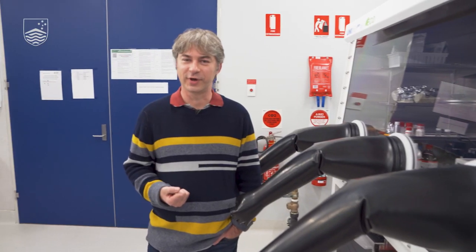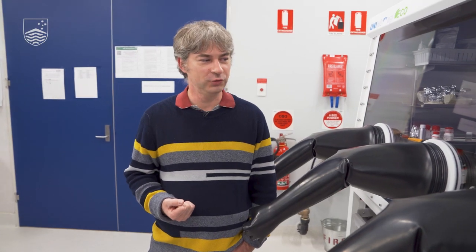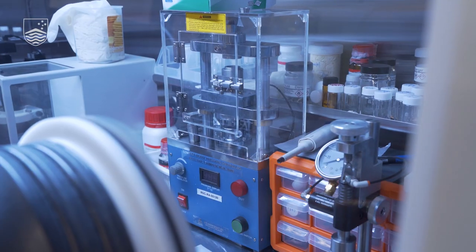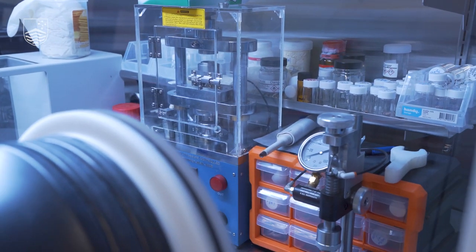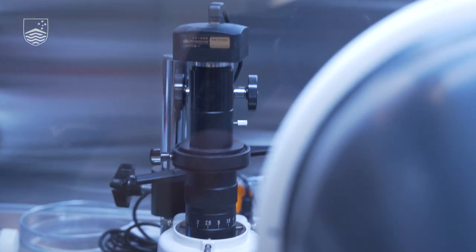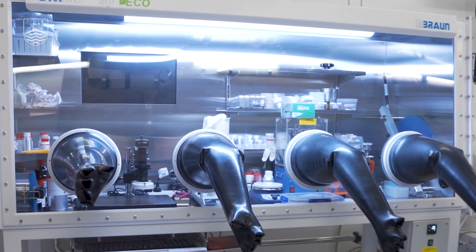This piece of equipment is our Agon glove box. We use it for battery fabrication. Here we can fabricate lithium ion batteries, sodium ion batteries, potassium ion batteries, and also hybrid energy storage devices, hybrid capacitors.